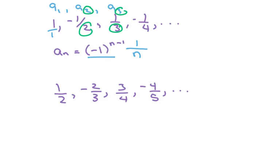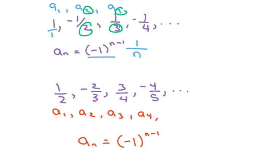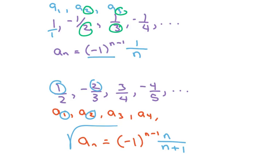This is the last one. It's a sub 1, a sub 2, a sub 3, a sub 4, and so forth — alternating signs. So I use the alternating sign (-1)^(n-1). The index numbers match the numerator, so that's n. The denominator is one more, so that's n+1. The answer is (-1)^(n-1) · n/(n+1).